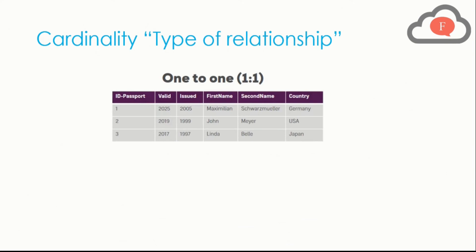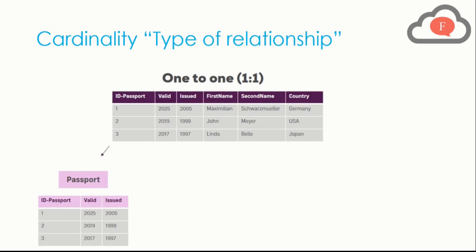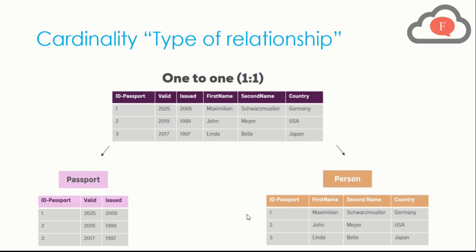There is another type of cardinality: one-to-one. How do you understand one-to-one? Hypothetically, if one thing is available in one data set and another thing is available in a second data set, and it is specific in both — that is one-to-one. For example, consider one table with columns: Passport ID, Valid, Issued, First Name, Second Name, and Country. I divide this into two tables — one passport-specific table with Passport ID, Valid, and Issued, and another person-specific table.